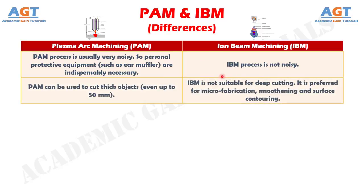Number 11: plasma arc machining can be used to cut thick objects, even up to 50 mm, whereas iron beam machining is not suitable for deep cutting. It is preferred for microfabrication, smoothening, and surface contouring.